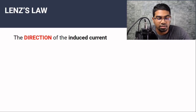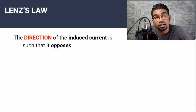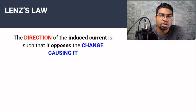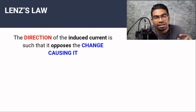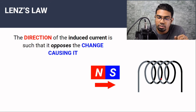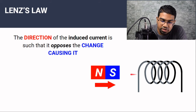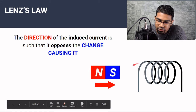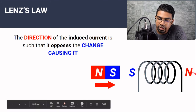Lenz's law states that the direction of the induced current is such that it opposes the change causing it. The direction of induced current will oppose the change we made to cause it in the first place. An easy way to picture this is by using a solenoid and a permanent magnet. If we move the magnet towards the solenoid to induce EMF, then the opposing factor would be to push the magnet away. To push it away, the magnetic pole that forms on this side of the solenoid must be south, so that it pushes the magnet away. And therefore if this side is south, then the other side will be magnetic north.